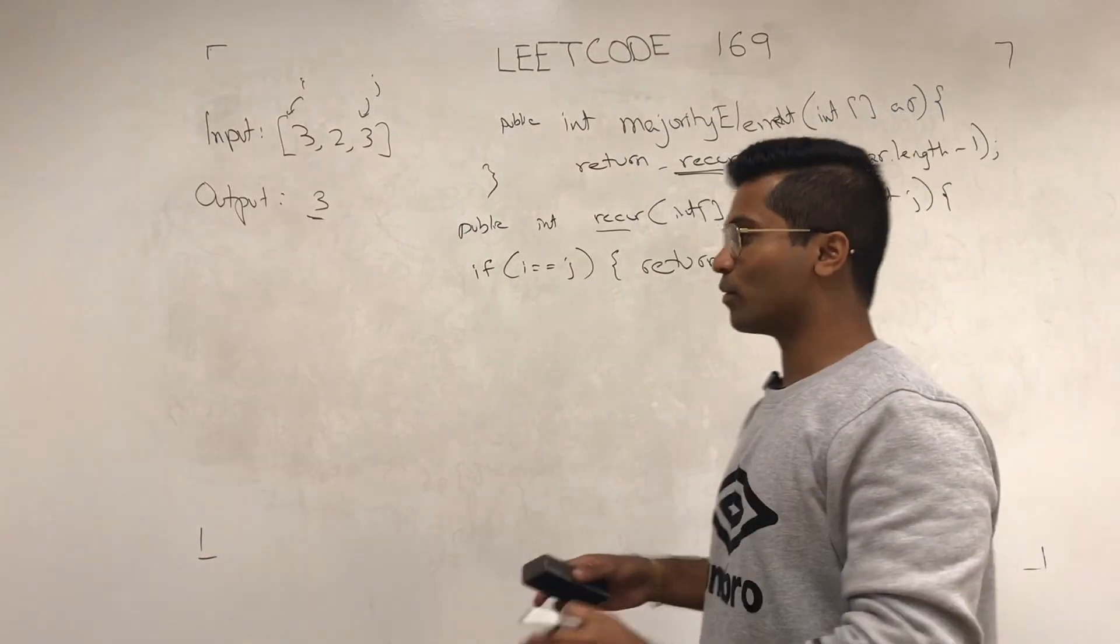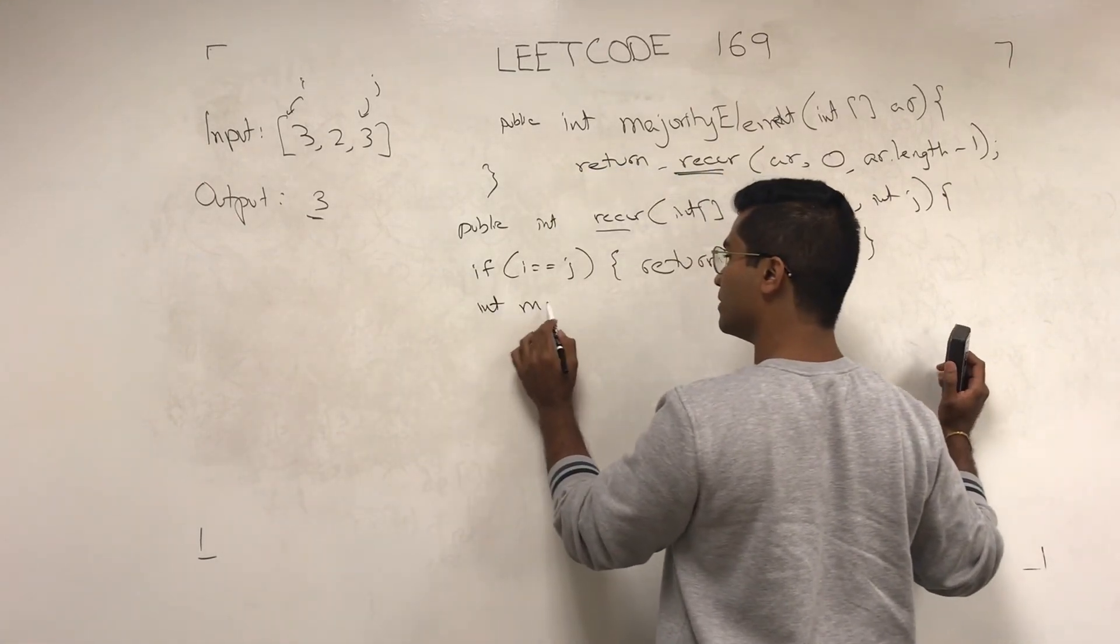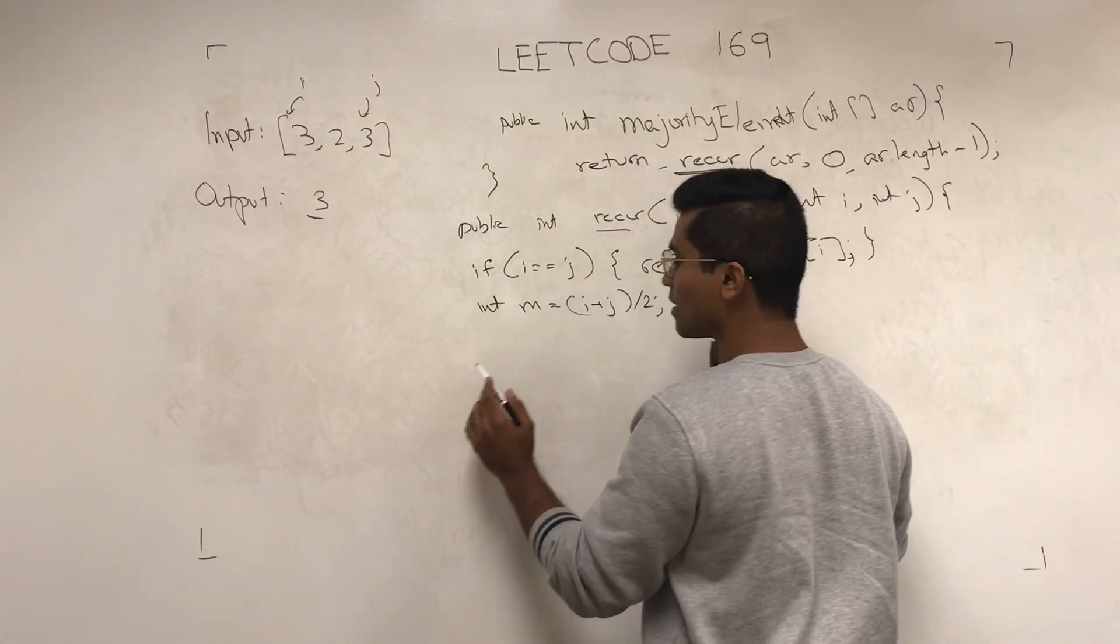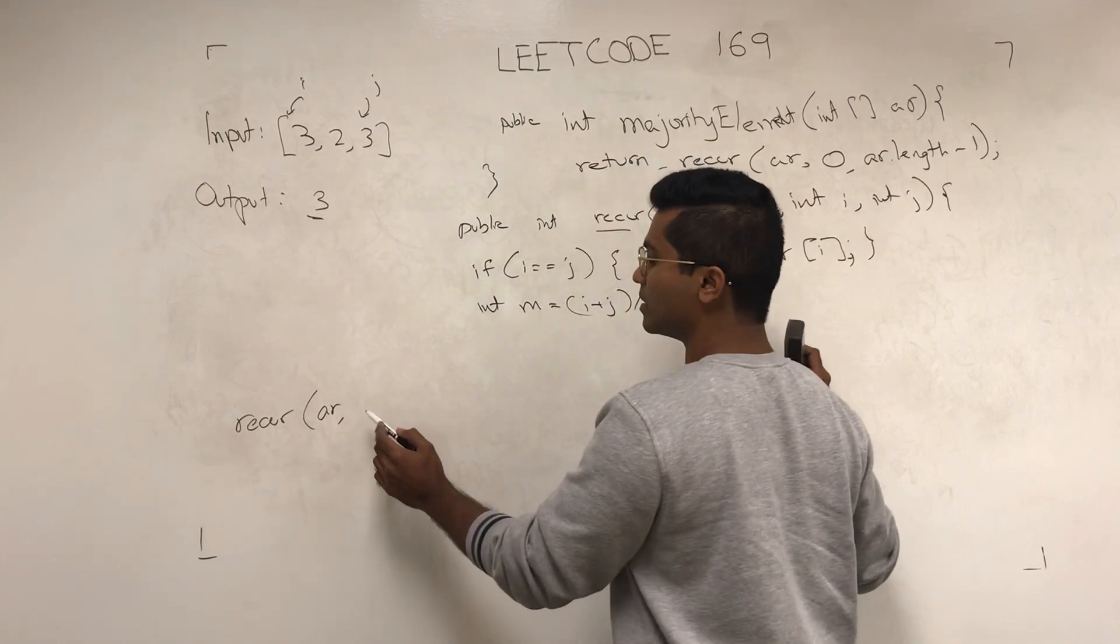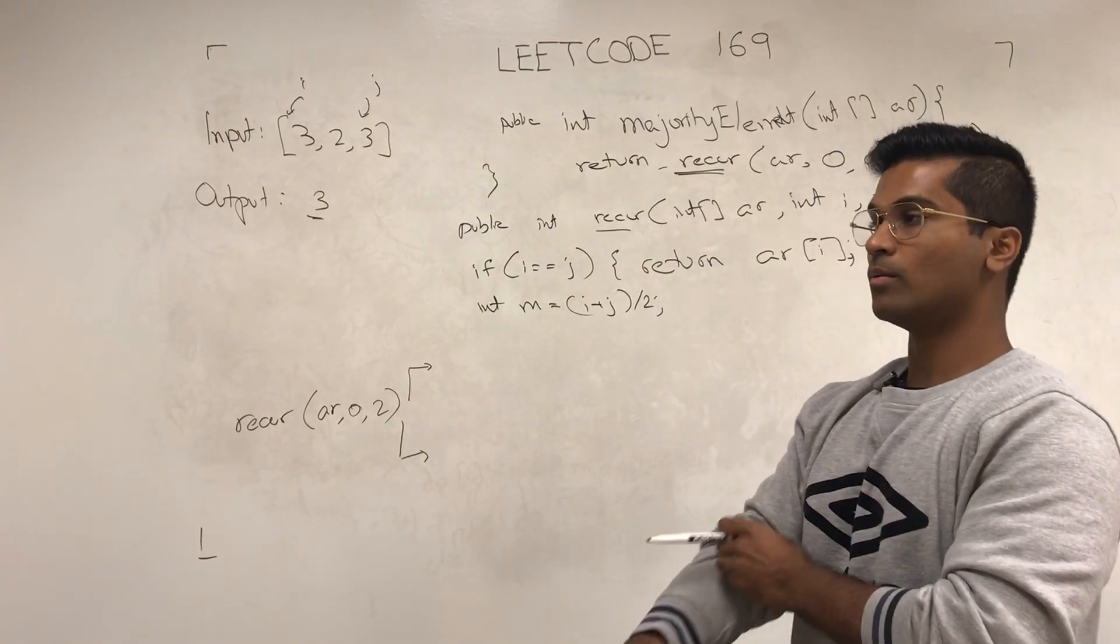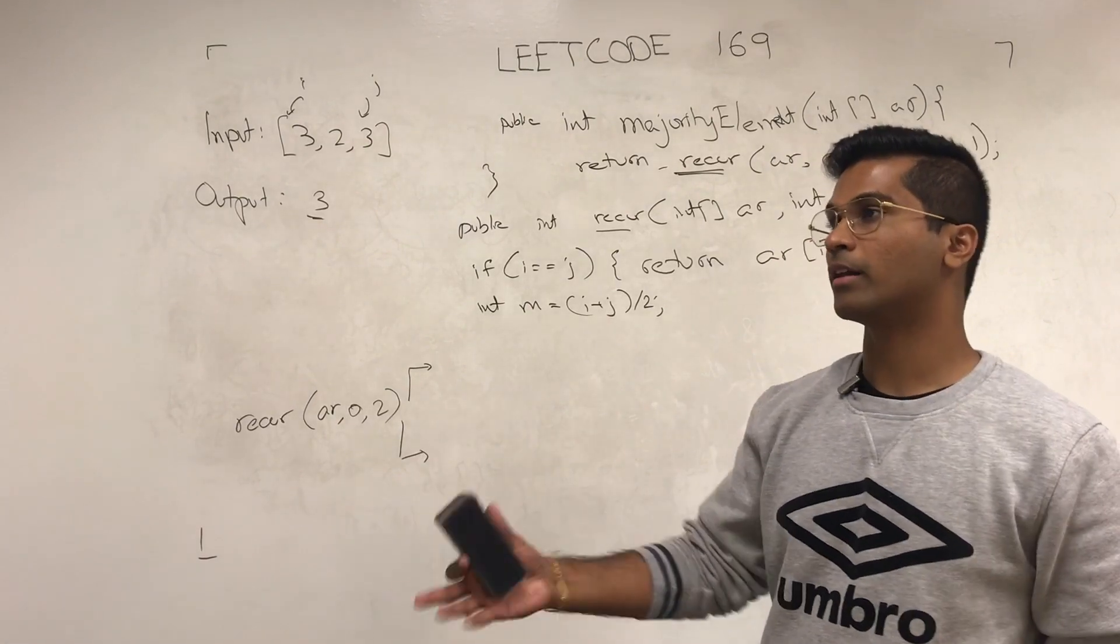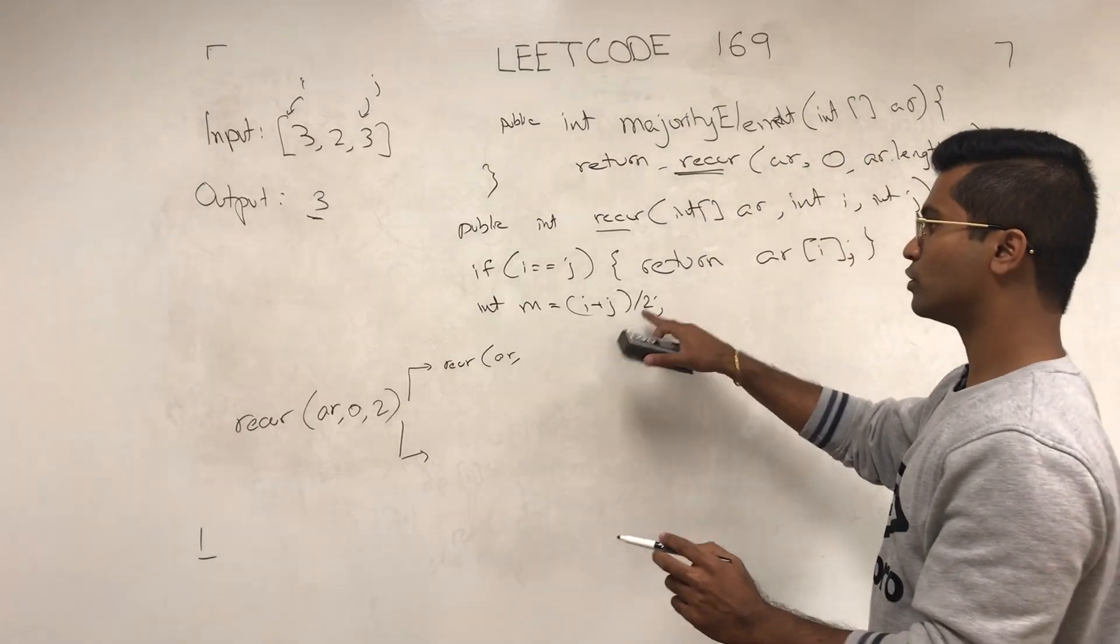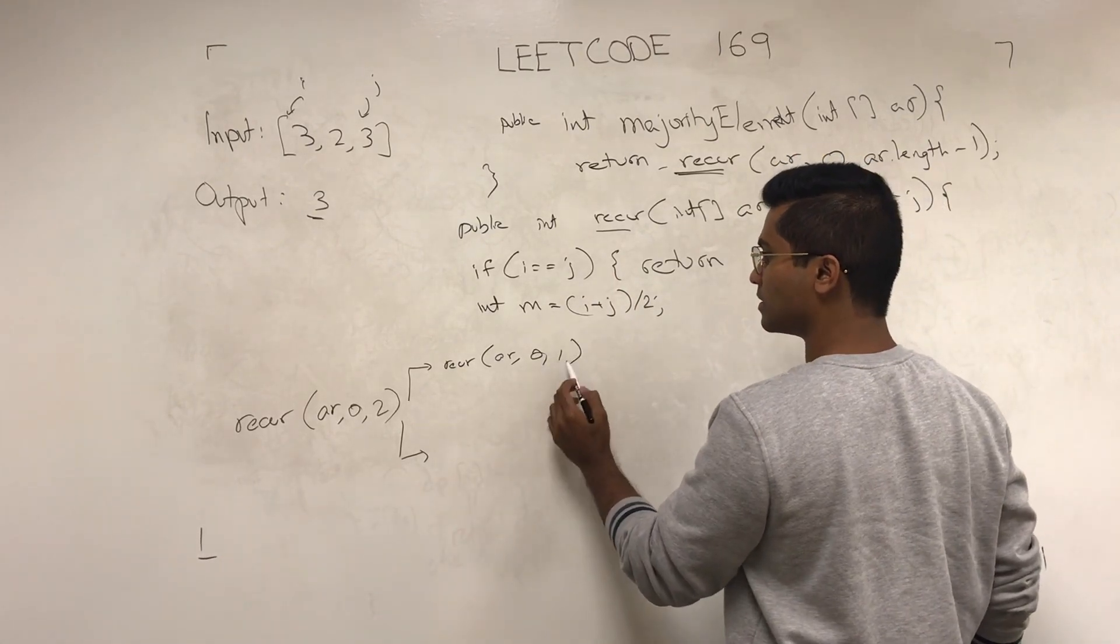Now we get into the fun stuff. So the recursive map, just follow me along, I'll write the code later. It's going to look like this. Int m is going to be i plus j by two and we're going to call recur with the array, i is going to be zero, j is going to be two, we're going to call the left side. We want to know what is the most common, most occurring element on the left and right side. So we're going to call it this guy is going to call recur AR, m is two because zero plus two by two is one, so m is going to be one. And he's going to call recur AR zero and one.